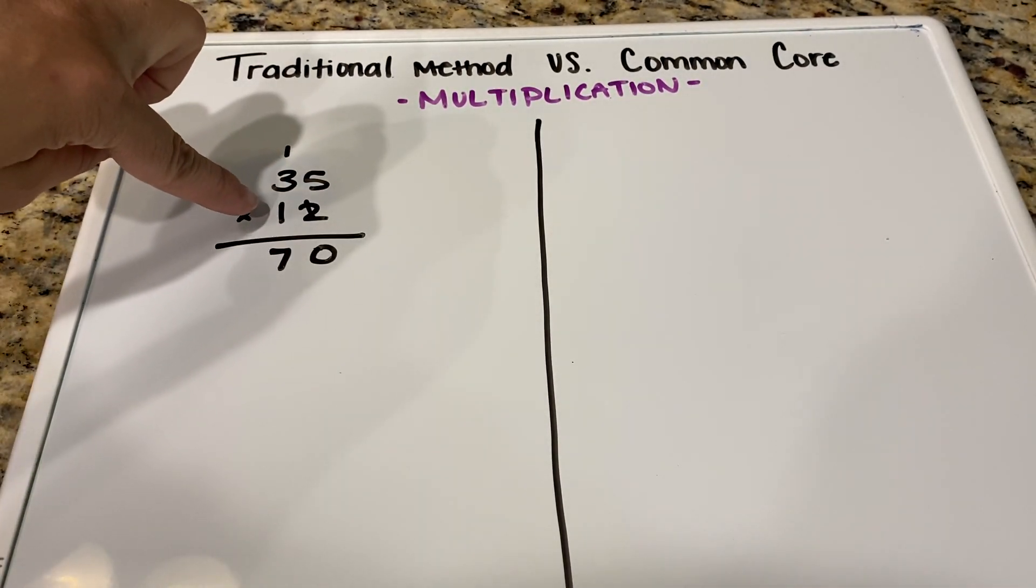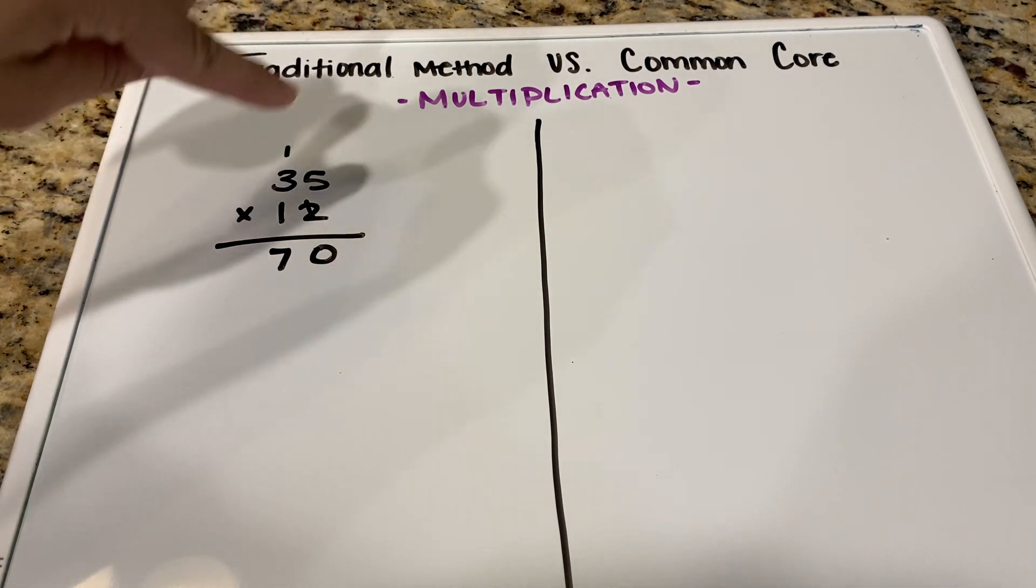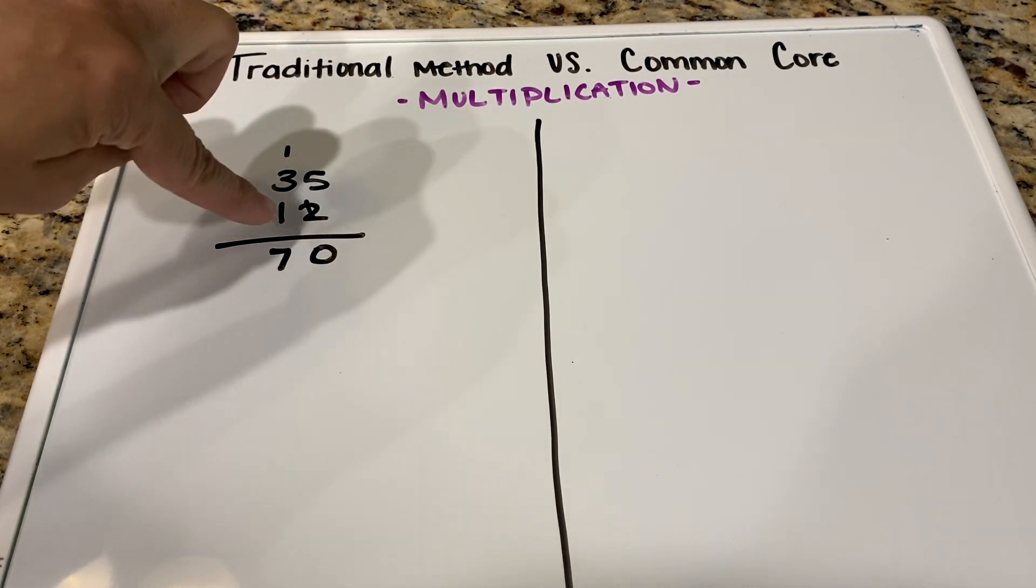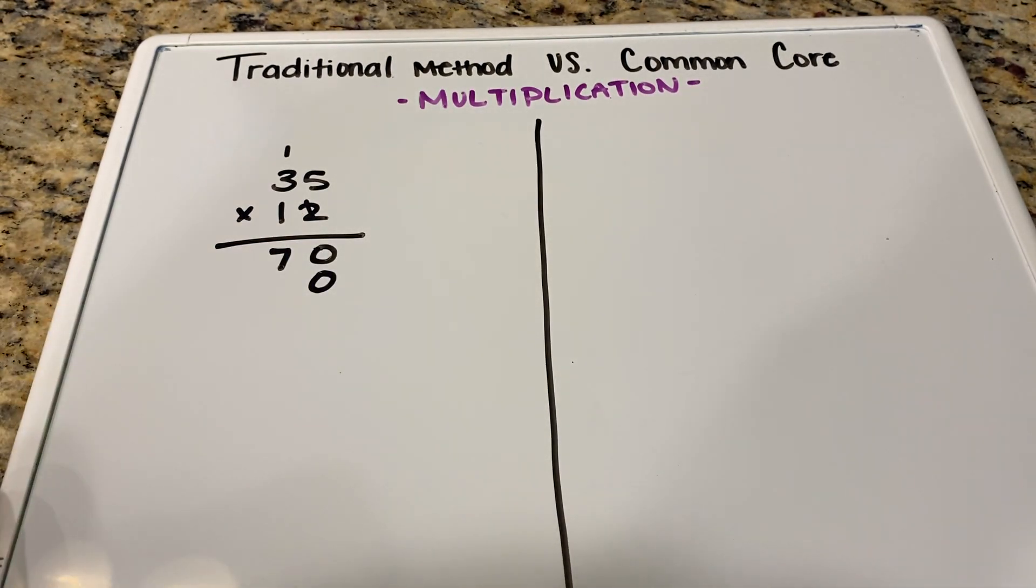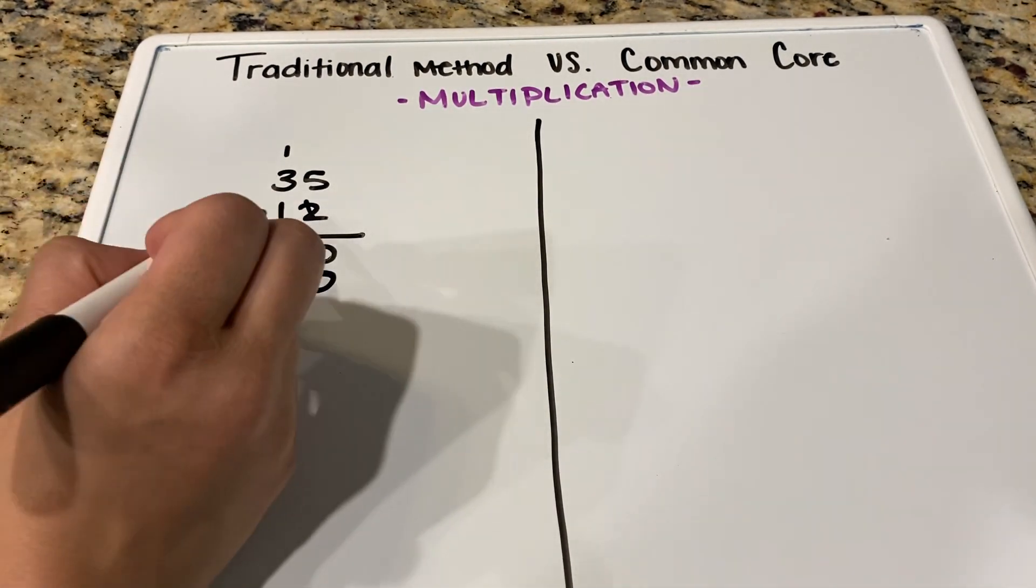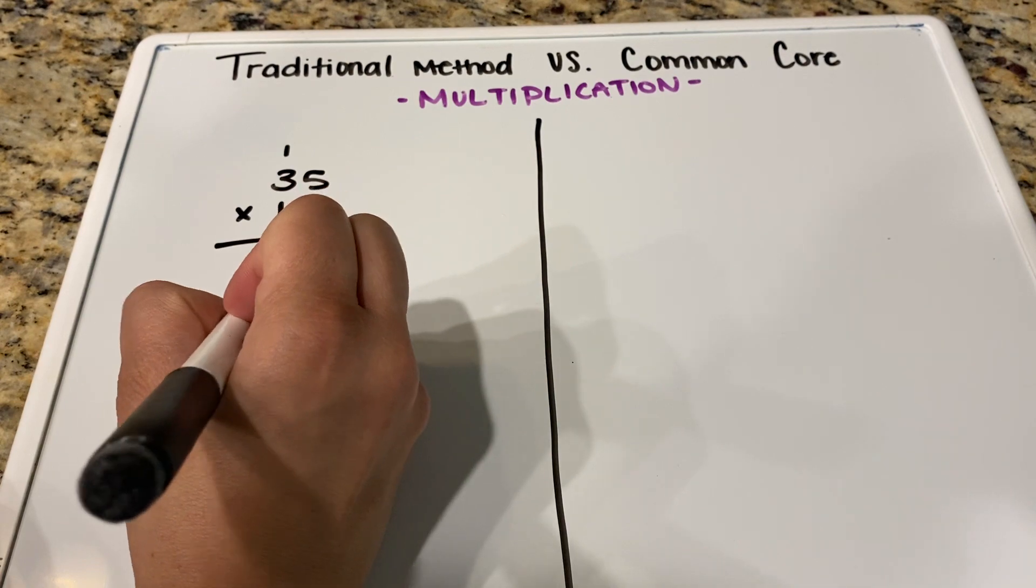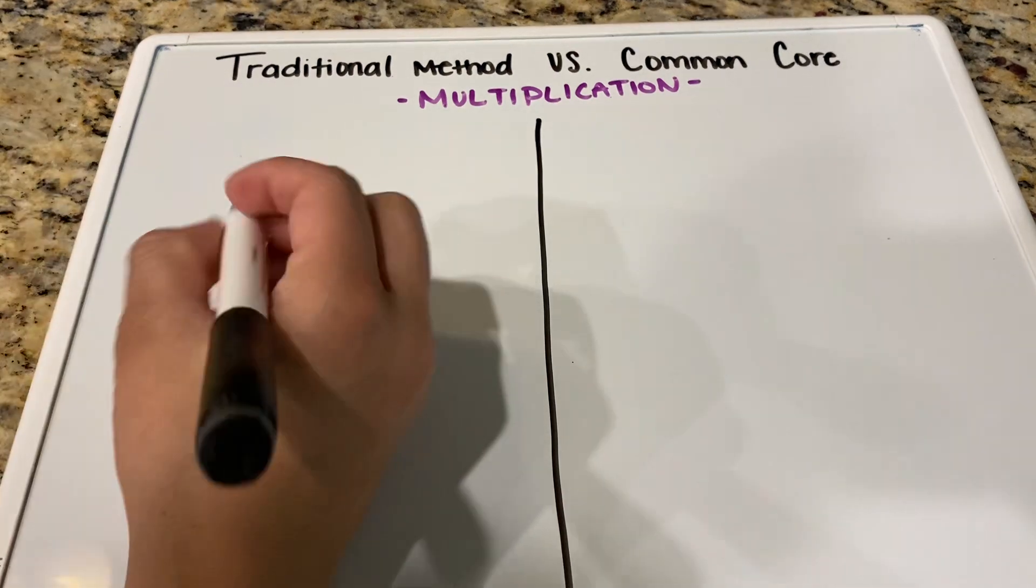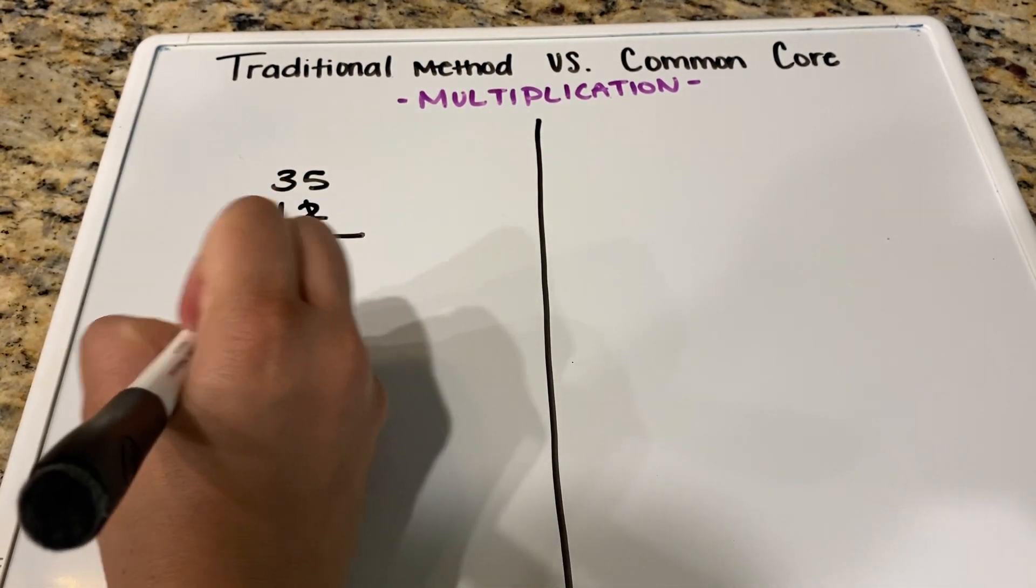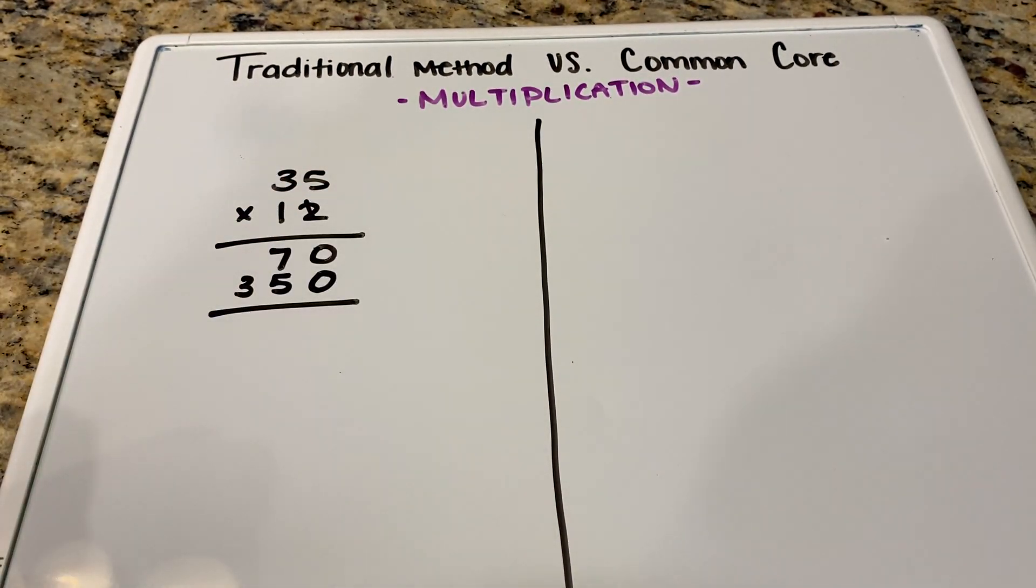Moving on to our tens place. 1 times 5 is 5, but that's in our tens place. So we actually need to make a filler because down here is our ones. So we're going to go ahead and do a filler as 0. And then 1 times 5 is 5. We no longer need this little guy. 1 times 3 is 3. And we go ahead and do our next step.